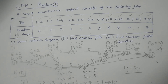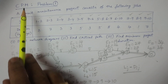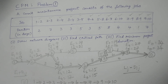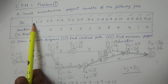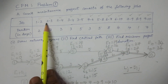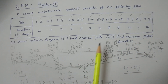Welcome to BSC statistics students. I am now discussing problem one in CPM, critical path method. In part one, I explained how to construct the network diagram for the given data — that is, jobs here called activities and duration DIJ — and with the help of that, how to construct a network diagram.